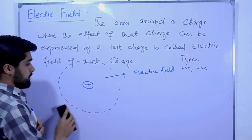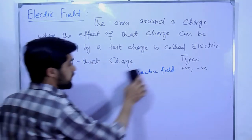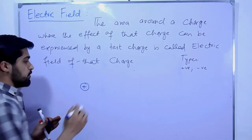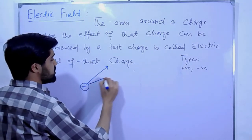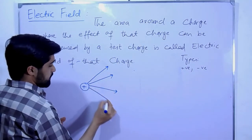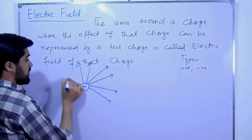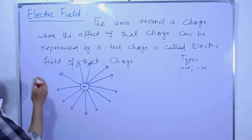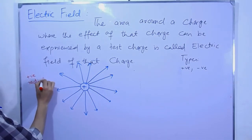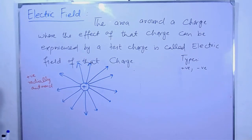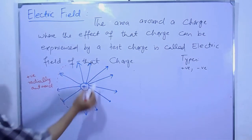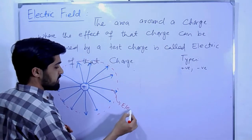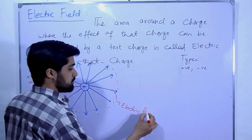اگر ہمارے پاس positive charge ہو تو electric field کیا ہوگا؟ For a positive charge, the electric field lines are radially pointing outward. ہم انہیں imaginary lines سے represent کرتے ہیں outward direction میں۔ ان lines کو ہم electric field lines کہتے ہیں۔